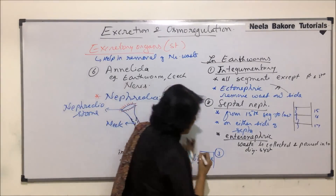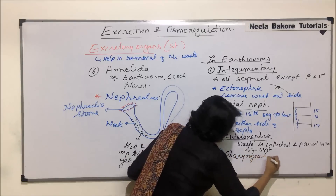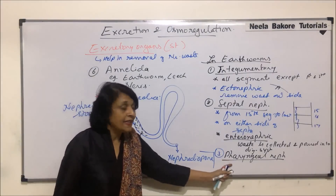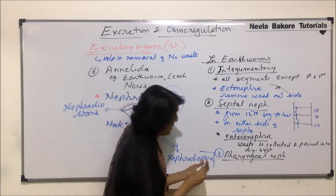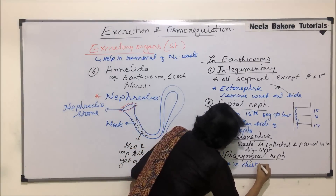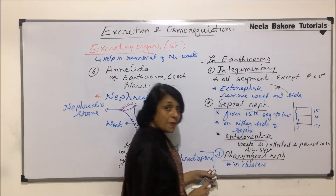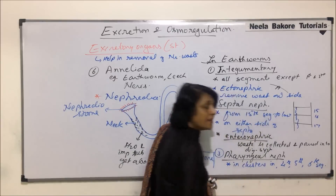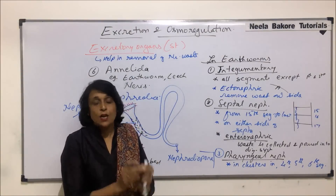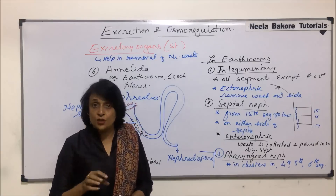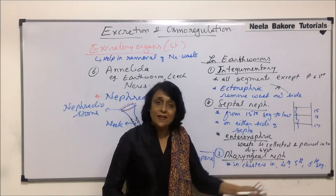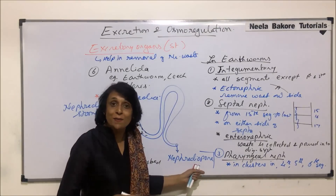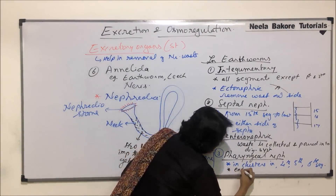The third type of nephridia found in earthworms are known as pharyngeal nephridia. As the name tells us, they are found around the pharynx in clusters, in the fourth, fifth, and sixth segments, which is the region where the pharynx is present. They also collect waste from the body cavity and pour it into the alimentary canal, so they are also enteronephric.